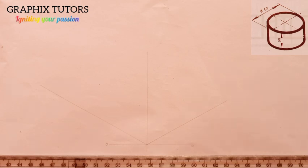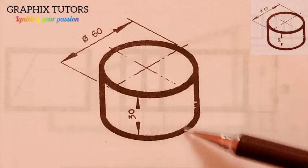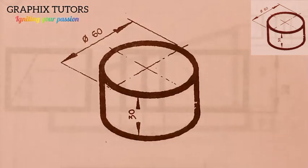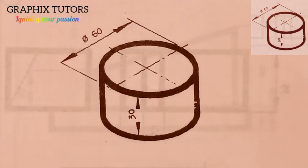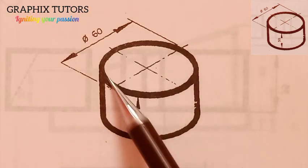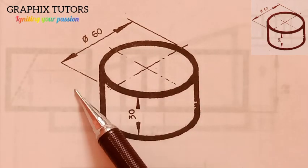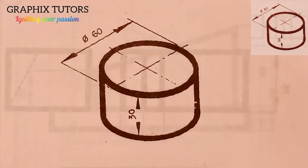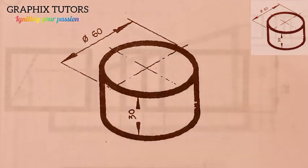The next thing you do is look at the dimensions of the figure. The height of this figure is given as 30. Now since this is a circular shape, both the length and the width are 60. Since it is circular, the only way you can get a circular shape in isometric is if the length and the width are the same — they must have equal dimensions. So if my height is 30, then the length and the width are both 60.